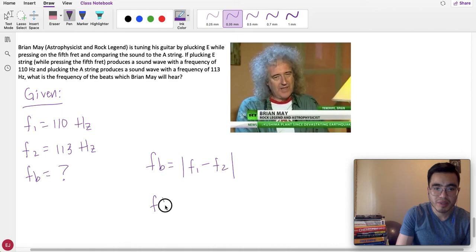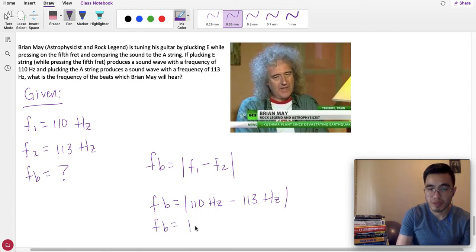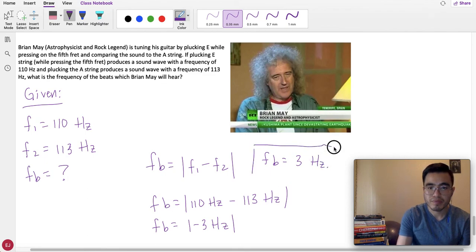Now let's just substitute. Frequency 1 is 110 Hz minus frequency 2, which is 113 Hz. That is very simple math, which is negative 3 Hz. And we need to take the absolute value, which is just make it positive. So, frequency of the beats would be 3 Hz. That's our answer.